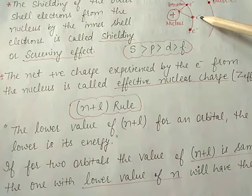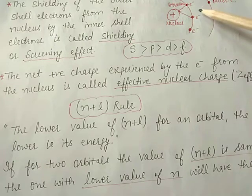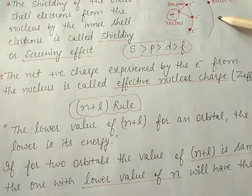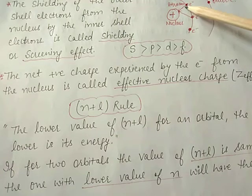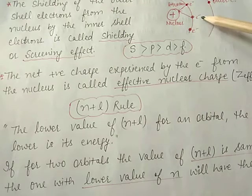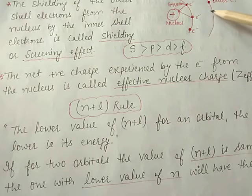Electrons present in s orbitals are more strongly and tightly bound to the nucleus compared to electrons present in p orbitals. P orbital electrons are more tightly bound compared to d electrons. So the energy of electrons in s orbitals is lower (more negative) compared to p orbitals, which is lower compared to d orbitals, and so on.